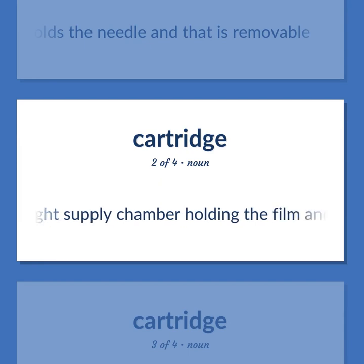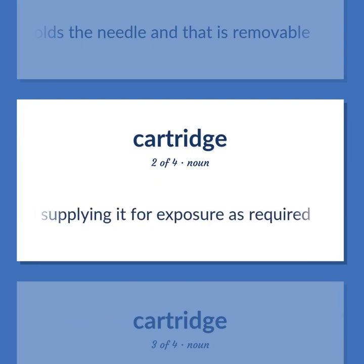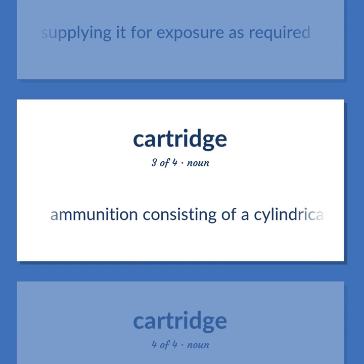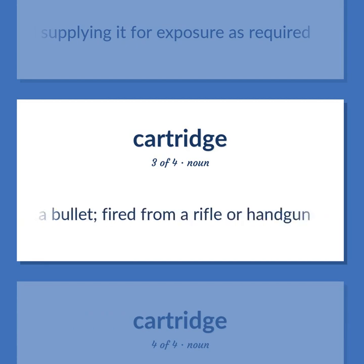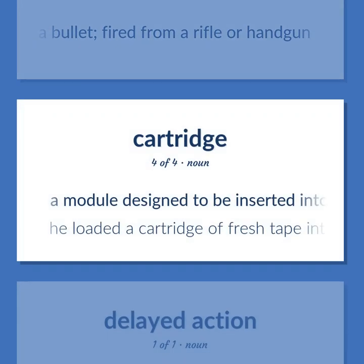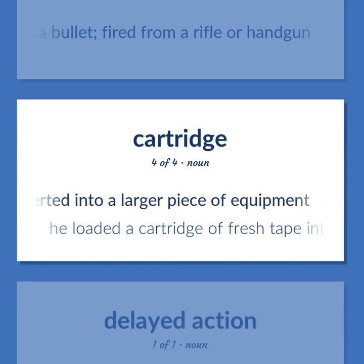A light-tight supply chamber holding the film and supplying it for exposure as required. Ammunition consisting of a cylindrical casing containing an explosive charge and a bullet, fired from a rifle or handgun. A module designed to be inserted into a larger piece of equipment. He loaded a cartridge of fresh tape into the tape deck.